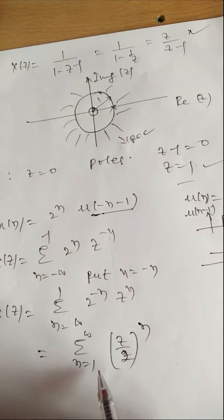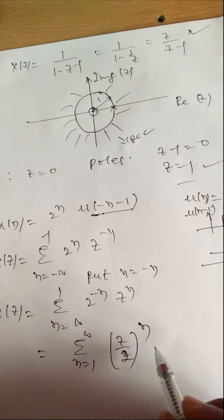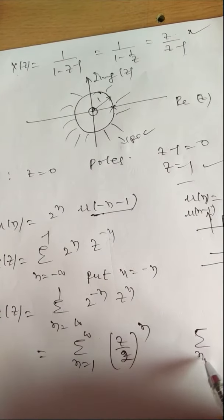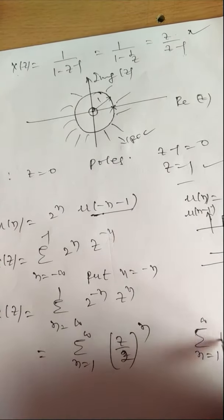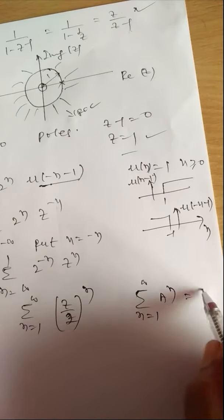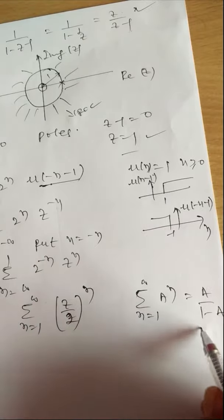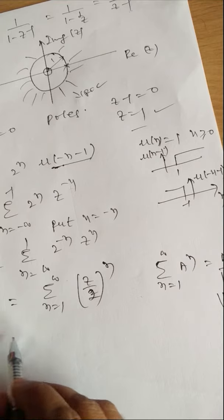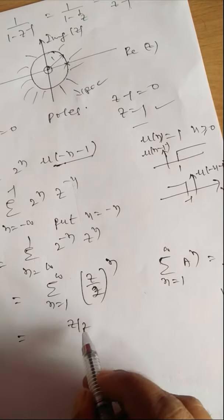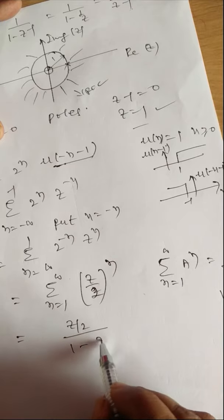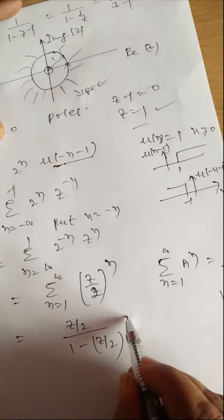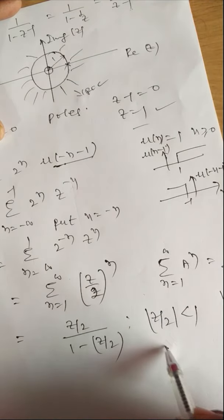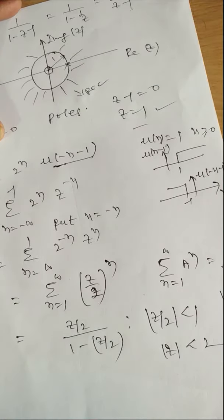So X(z) = summation from n = 1 to ∞ of (Z/2)^n. We know the series: summation from n = 1 to ∞ of A^n = A/(1-A), with condition |A| < 1. Taking A = Z/2, this becomes (Z/2) / (1 - Z/2), with condition |Z/2| < 1, meaning |Z| < 2. This is the ROC: |Z| < 2.